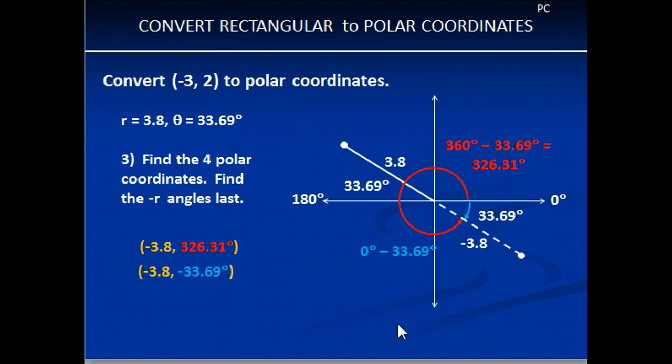Now we have to find the other two, so those are the negative r or the opposite of r. So we are going to flip over to the other side and do our negative 3.8, but you will notice that these angles are different. So if we simply start at our polar axis and we go down to the r, our hypotenuse, we end up at negative 33.69.